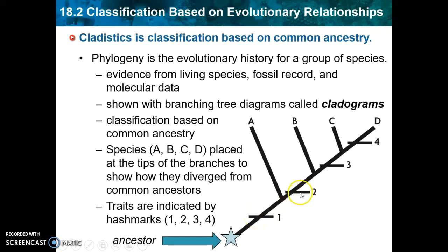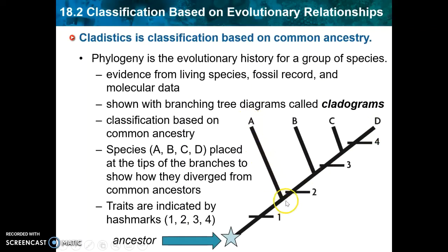Trait number two might be something like having a jaw. Some of the earliest organisms didn't have a hinged jaw — they couldn't open and close their mouth — so that is a trait that appeared a little later in the fossil record. If number two is the presence of a jaw, then that would be present in species B, C, and D, but not in species A, because the branch for species A diverges before that new trait shows up. So trait two is only present from that point on through the rest of those three branches.